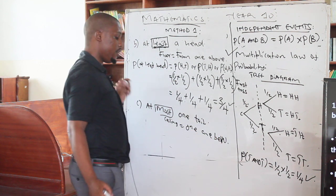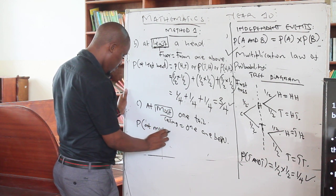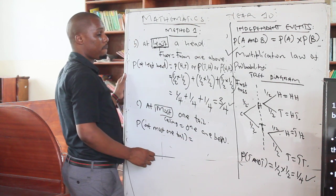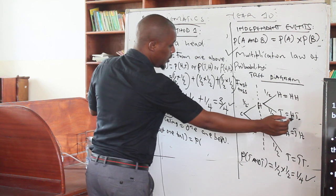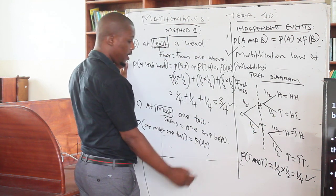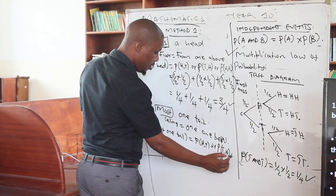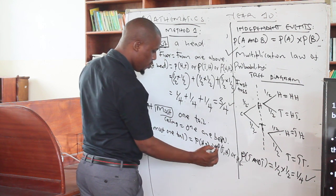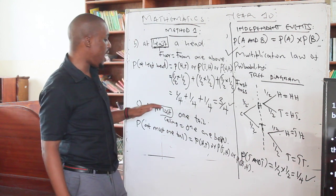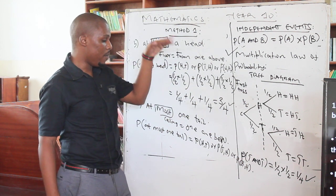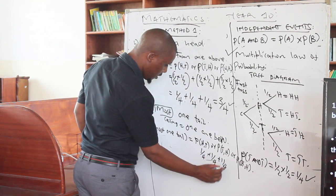That is another concept you need to understand. The probability of getting at most one tail — meaning one and below — includes head-tail (one tail), or tail-head (one tail), or head-head (zero tails). Because 'at most one tail' means one or zero. Each combination is one over four: one over four plus one over four plus one over four, giving three over four.